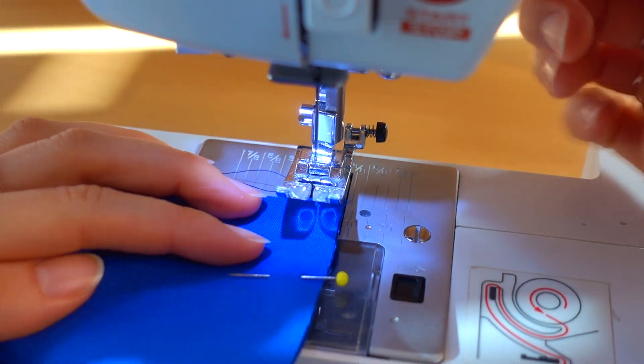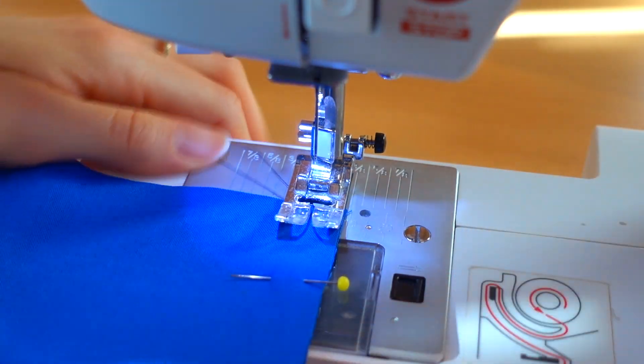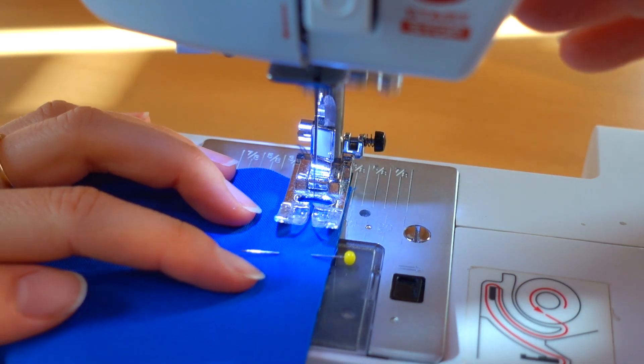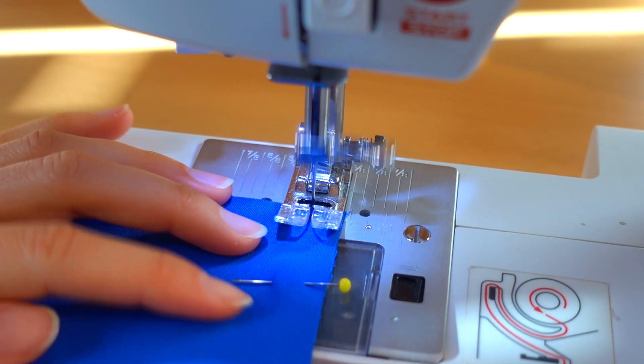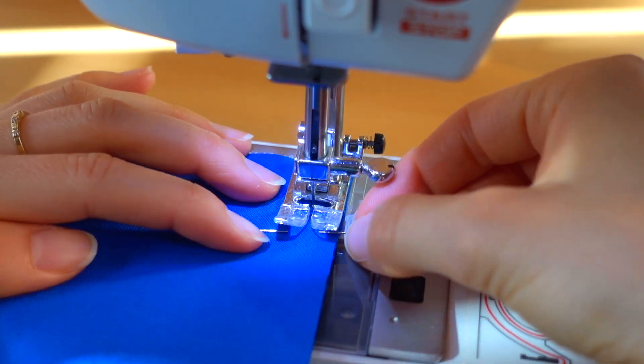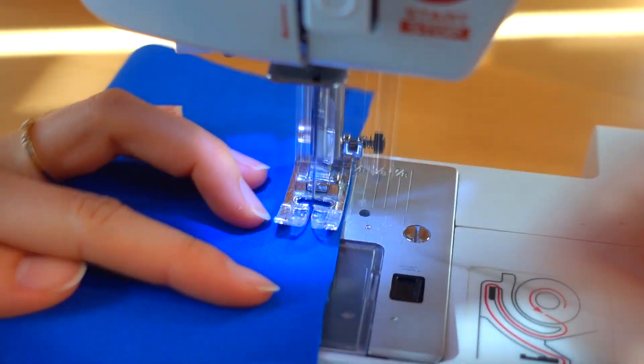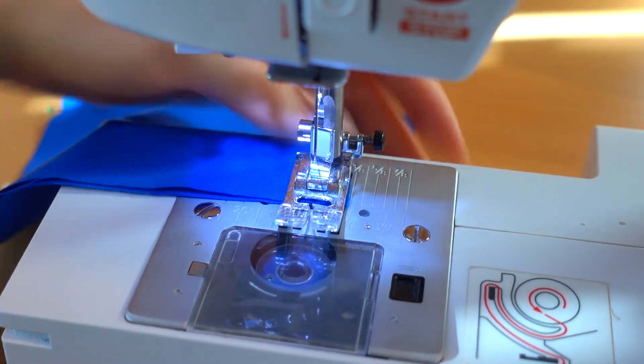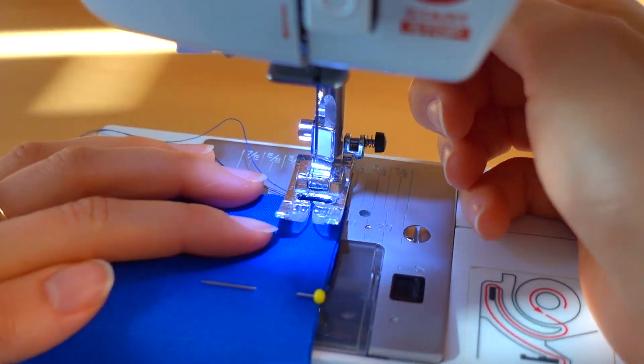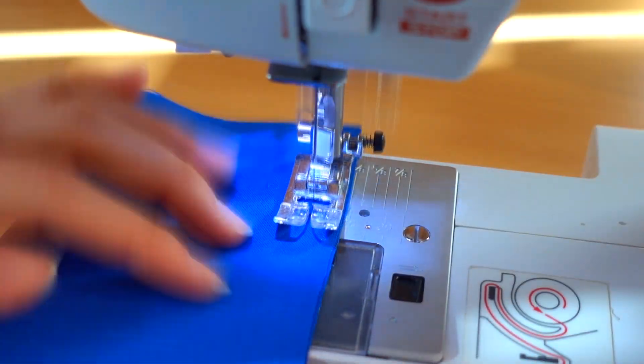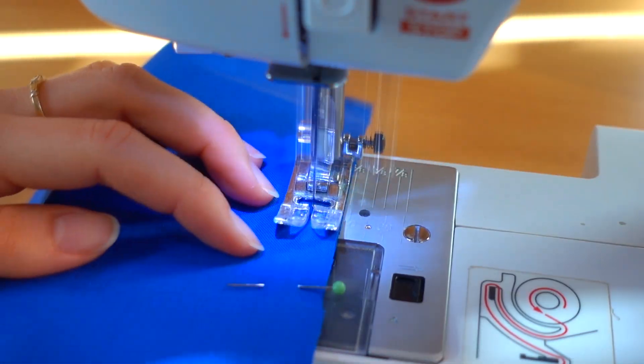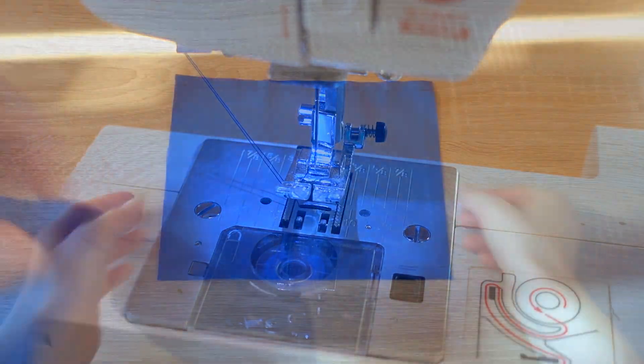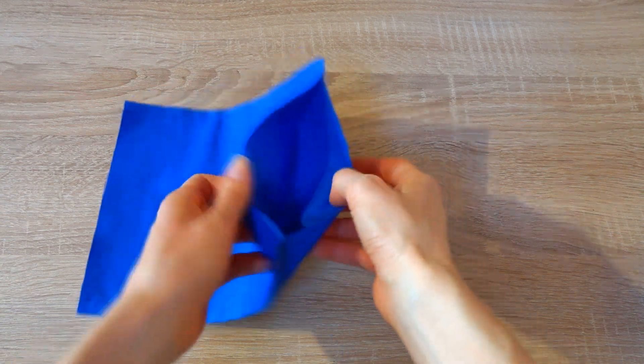Sew the two long edges together. And don't forget to secure the stitches by sewing a few stitches backwards and then forwards again. When you're done, cut off the threads. Turn the pieces inside out.